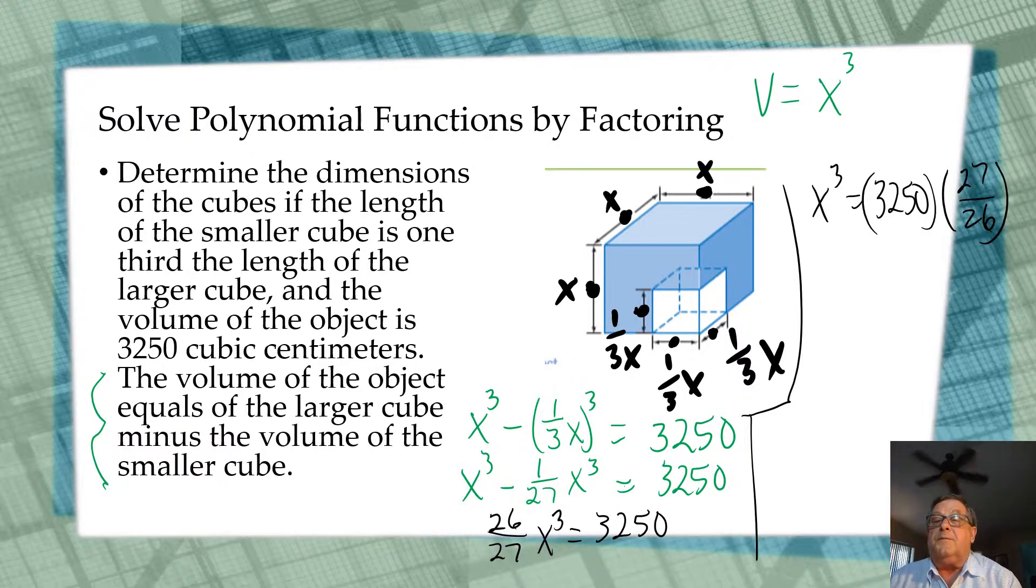Let's see what we've got here. 27 times 3,250 is 87,750, and if I divide that by 26, that is 3,375. So now x cubed equals 3,375.